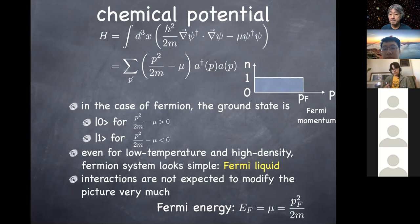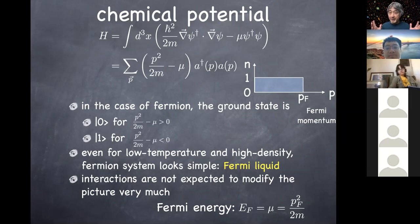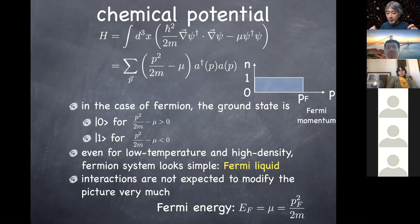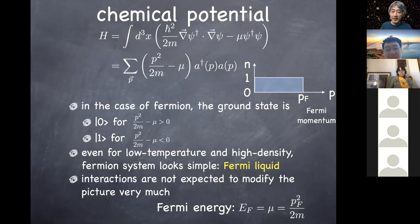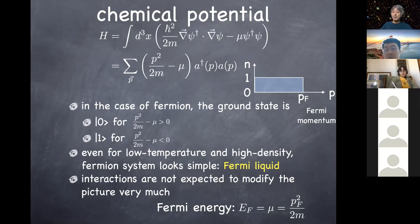In QFT, you simply say: use the vacuum state for high-momentum modes and the occupied state for low-momentum modes, and their product is the complete ground state. That's the beauty of QFT — you can deal with multi-particle states and identify the ground state in just two lines. This is probably familiar to those studying condensed matter physics.